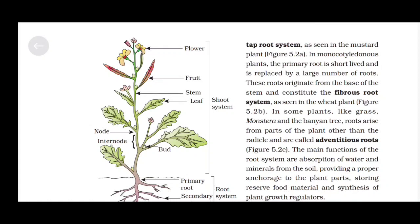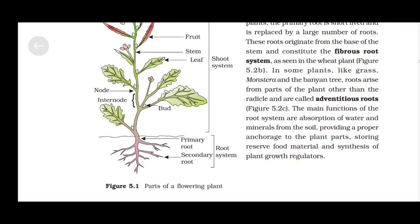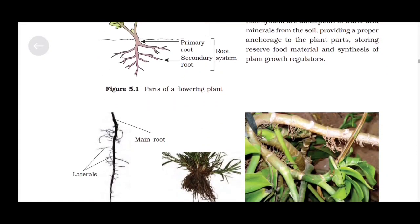In some plants like grass, Monstera and the banyan tree, roots arise from parts of the plant other than the radicle and are called adventitious roots. The main functions of the root system are absorption of water and minerals from the soil, providing proper anchorage to the plant parts, storing reserved food material and synthesis of plant growth regulators.